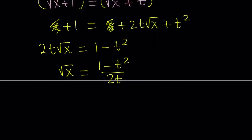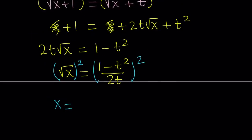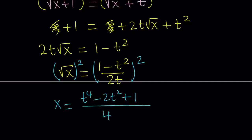We do a lot of squaring here. This gives us x equals — if you have a fraction that is squared, you square the numerator and the denominator to make a new fraction. So squaring that expression gives us t to the fourth power minus 2t² plus 1 in the numerator, and the denominator is going to be 4t².